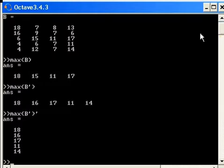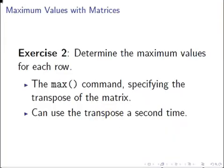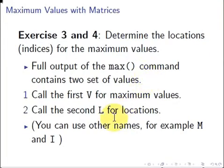The next part is to determine the locations for the indices of the maximum value. What we're going to do is use the full output of the MAX command. So we're going to set up a little output data object, and it's going to contain two sets of values.